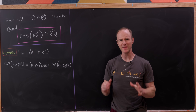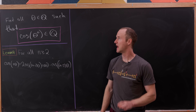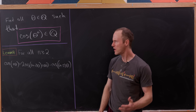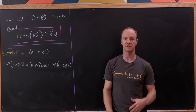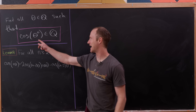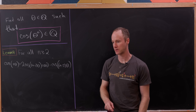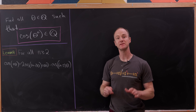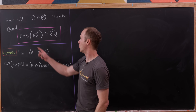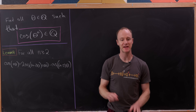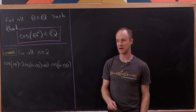Today we're going to look at a nice, aesthetically pleasing question: what rational angles can we plug into the cosine function and achieve a rational number? This is much different than the question of when is cosine rational, because that actually happens many, many more times.